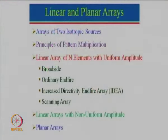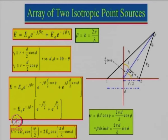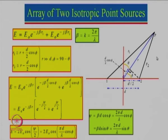Let us take an example of an array of two isotropic point sources. We have two sources — source 1 and source 2 — both isotropic elements, and we want to find out what is the E field at point P. We are going to a far away point, so we are calculating the far field radiation. The condition here is that the far field distance is much greater than D, which is the distance between the two elements. Since the distance is very large, we can assume the field amplitude will be relatively constant, but the phase will be different.